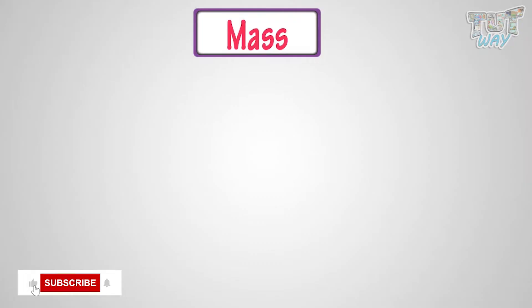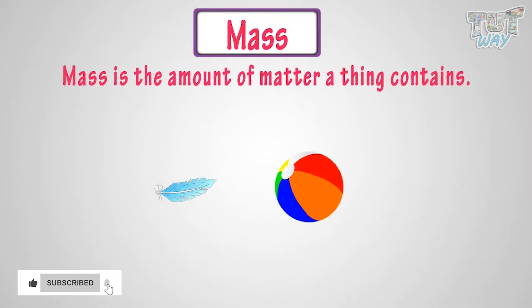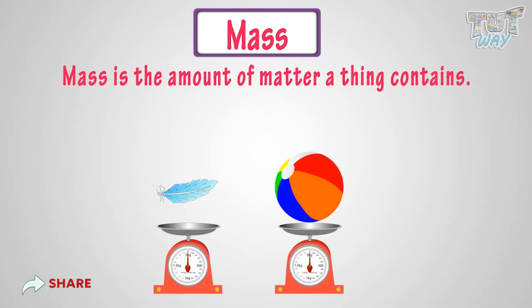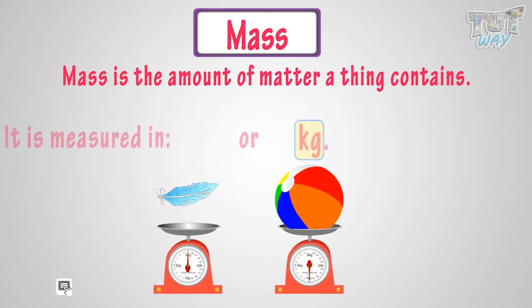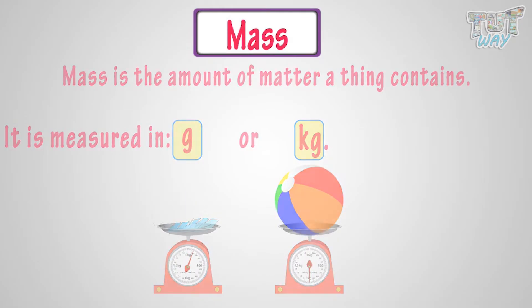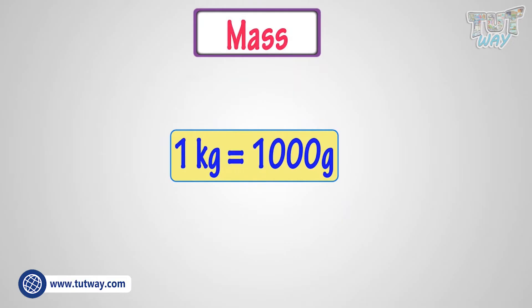Mass is the amount of matter that a thing contains. The units of measuring mass are kilograms and grams, where one kilogram is one thousand grams.